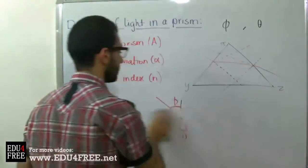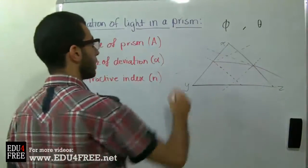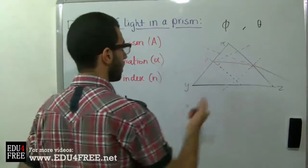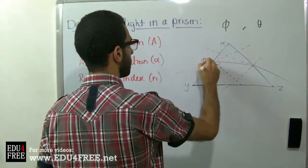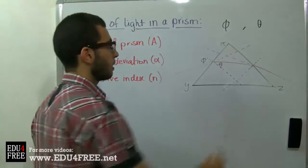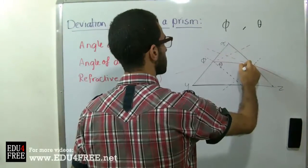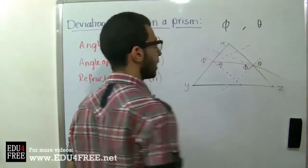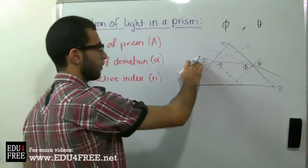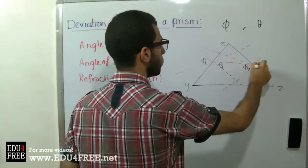Now let's apply this to the prism. At the first face, the angle of incidence is phi and the angle of refraction is theta. At the second face, light falls and refracts again, giving another phi and theta. Since these angles are different at each face, we number them: phi 1, theta 1 at the first face, and phi 2, theta 2 at the second face.